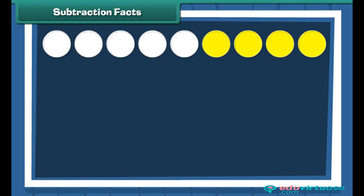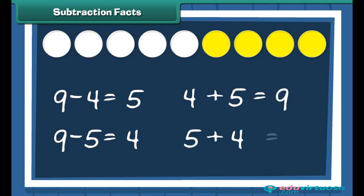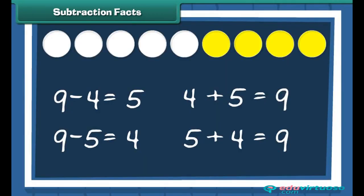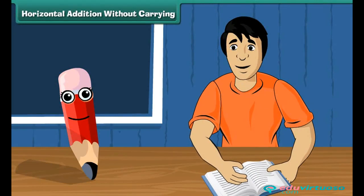Let me tell you about subtraction facts. We have nine circles; out of these, if four circles are colored, how many white circles are left? Nine minus four equals five, and nine minus five equals four. Remember the addition fact: four plus five equals nine and five plus four equals nine. For every addition fact there is a corresponding subtraction fact. This shows that three numbers can be interchanged in addition or subtraction.